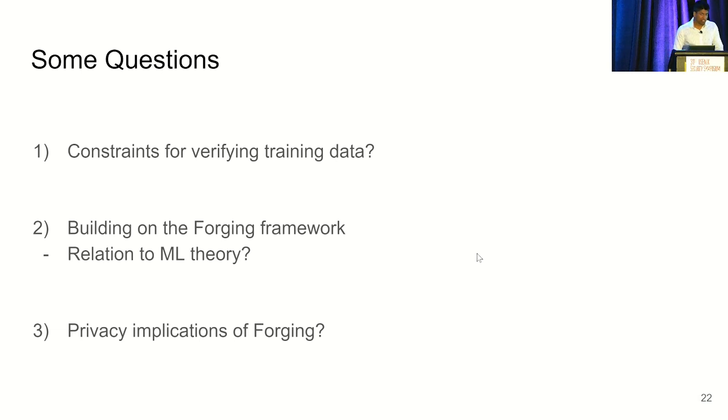Another question is building on this forging framework. Because what we've done is related data sets in terms of what models they produce. And this is some sort of generalization, which is a key question in a lot of ML theory. And the third part, which is maybe what a lot of people have on their mind right now, is the privacy implications of forging. Because what we've sort of showed is that it's difficult to do membership inference in sub-settings. But this is not the usual membership inference. We're not working with models. We're working with proofs of plausibility.